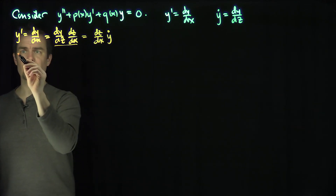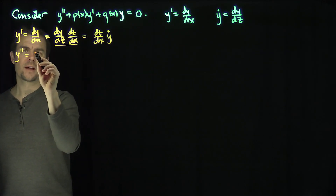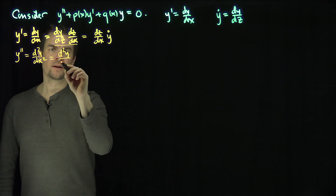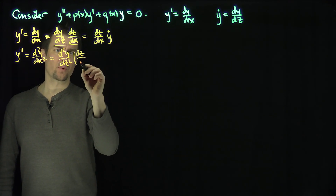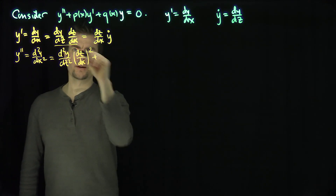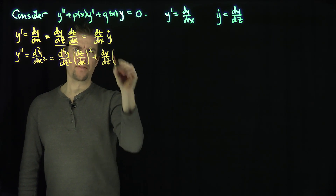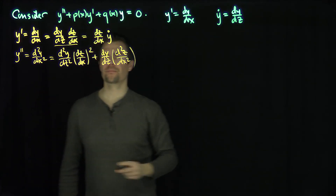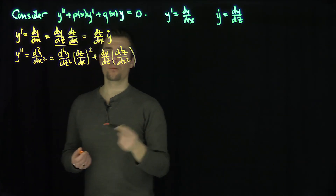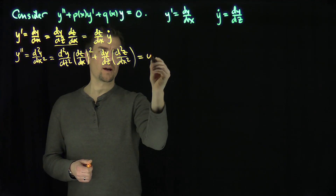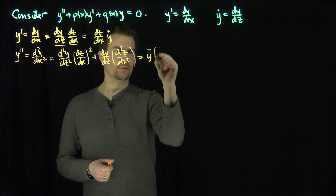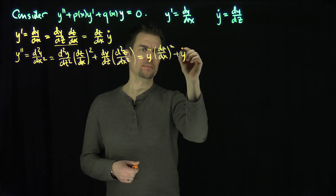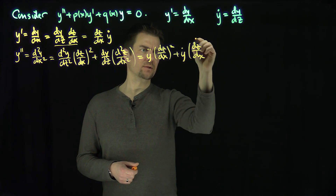Now what's the second derivative? Using the chain rule, y double prime — that's d²y/dx² — equals d²y/dz² times (dz/dx)² plus dy/dz times d²z/dx², by the product rule. So filling this in, this is really y double-dot times (dz/dx)² plus y-dot times (dz/dx)².